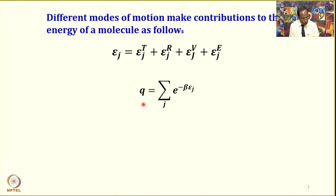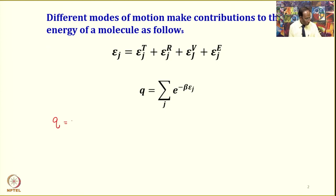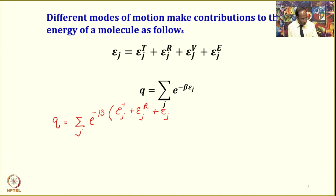We know that the molecular partition function is defined as the summation over j of exponential minus beta times e_j. Let us substitute now. That means q equals summation over j of exponential minus beta times the quantity e_j translational plus e_j rotational plus e_j vibrational plus e_j electronic — summation over all states.